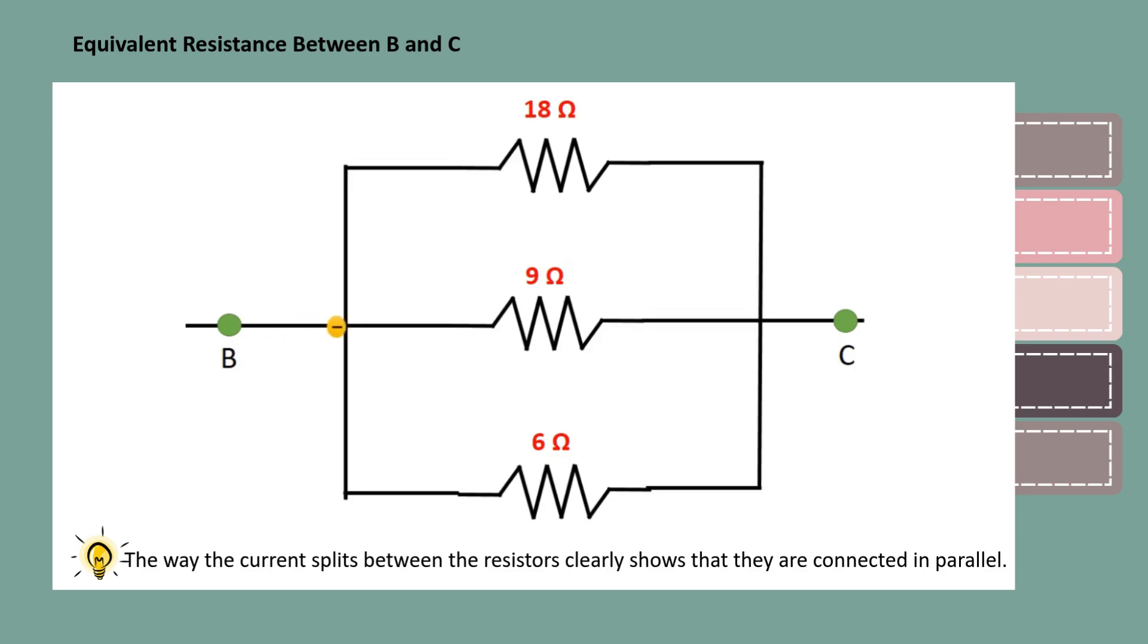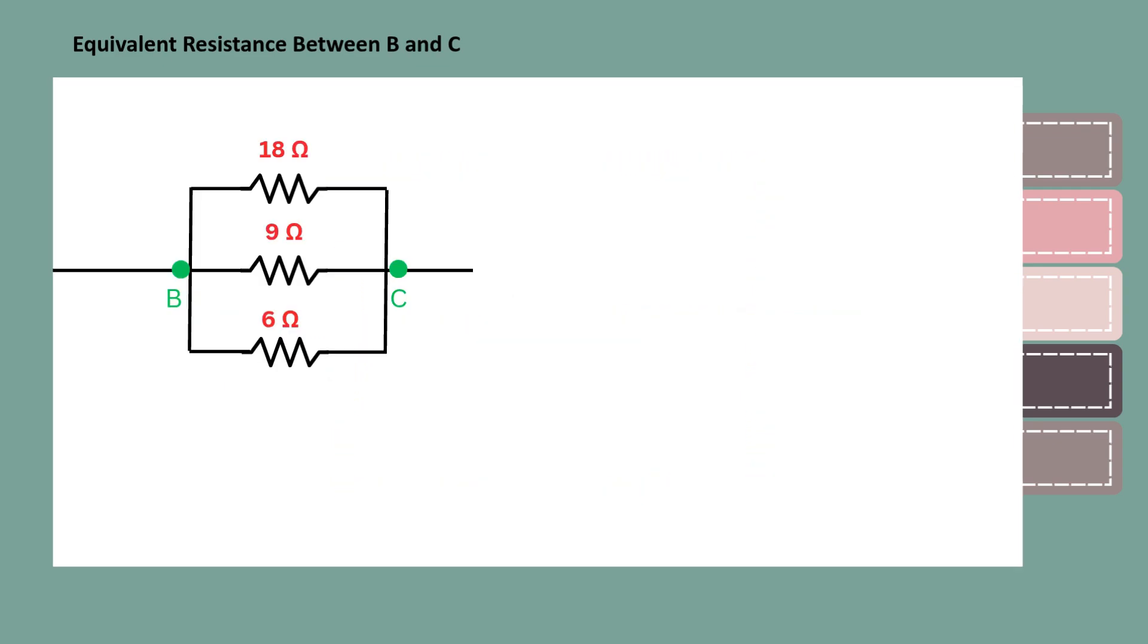Now, take a closer look at the current flow between points B and C. The current splits and flows through resistors. This splitting of current is a clear indication that the resistors are connected in parallel.